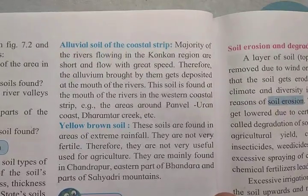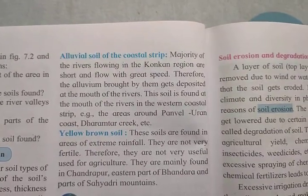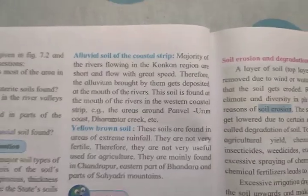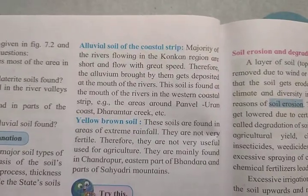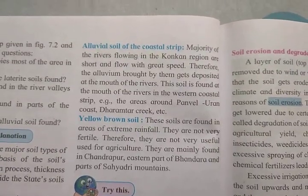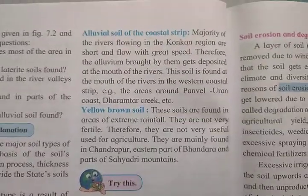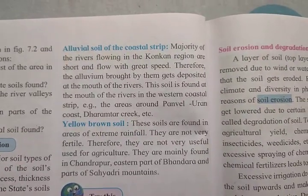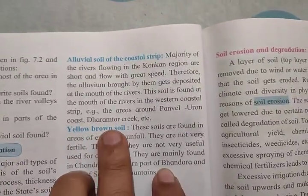The laterite soil is the soil of the coastal strip. The majority of rivers flowing in the Konkan region are short and flow with great speed. Therefore, the alluvial material brought by them gets deposited at the mouth of the river in the western coastal strip. For example, the areas of Panwell and Dharamthar.